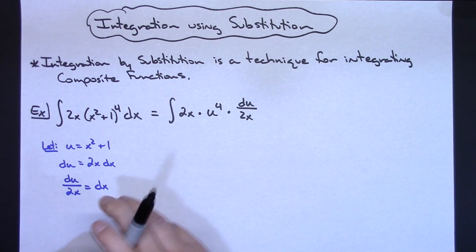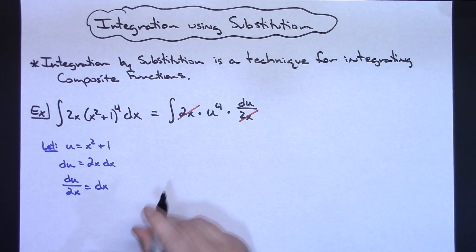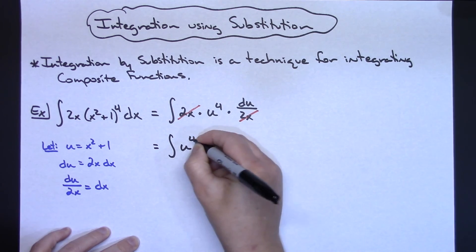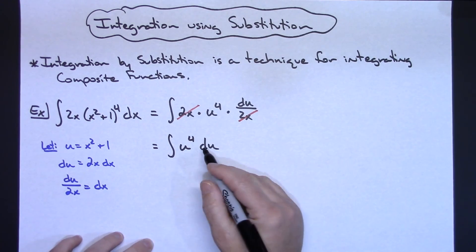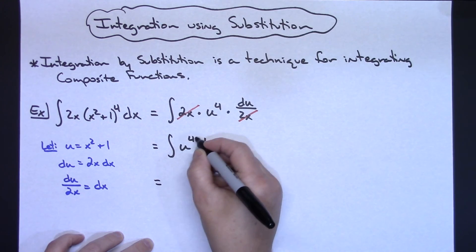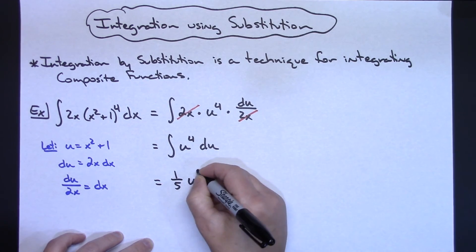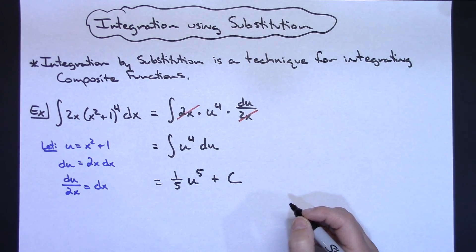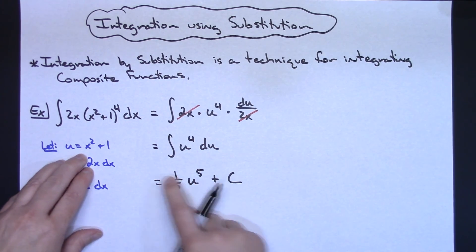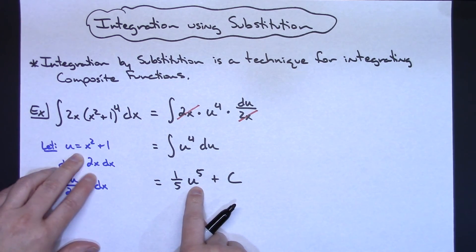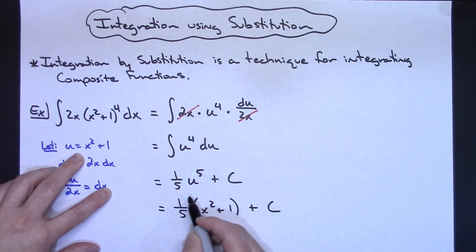If I can cross out all of my x's, I'm going to have an integral problem here in just u's, which is what I want. I've got this 2x on top and this 2x on the bottom, so I am going to be able to cross those out, and that's going to leave me with the integral of u to the 4th du. It's at this point that I know I have made the right u substitution because all of my x's crossed out. From here you can just go ahead and integrate like normal. Integrating u to the 4th means adding 1, giving me a 5, so I have 1/5 u to the 5th plus c. Now this answer is in terms of u, but my original problem is in terms of x, so I need to substitute back: 1/5 times x squared plus 1 to the 5th, plus c.